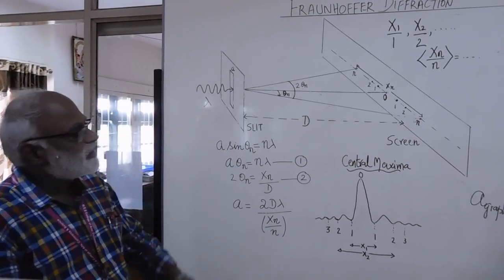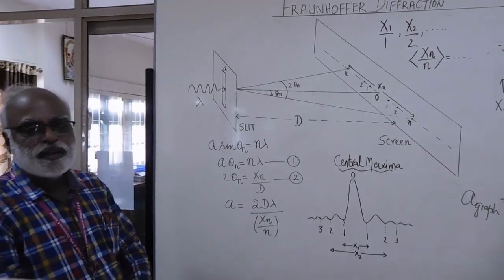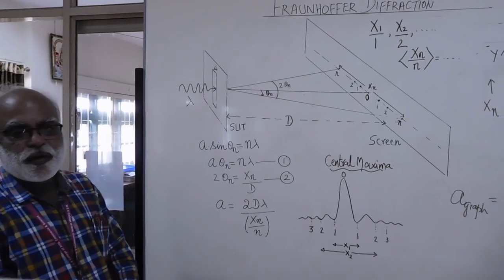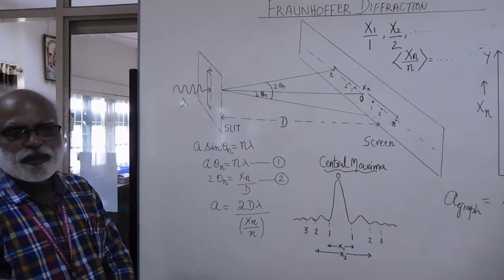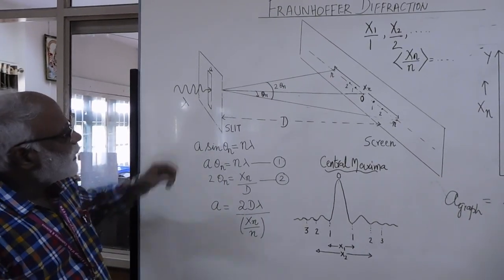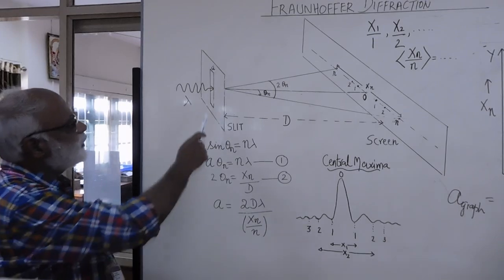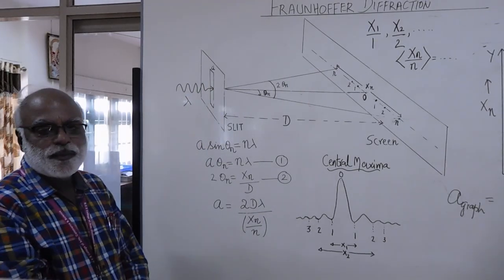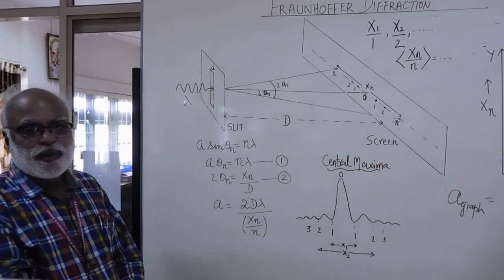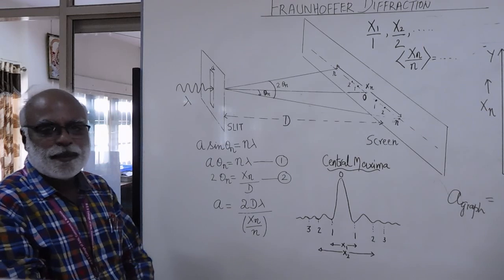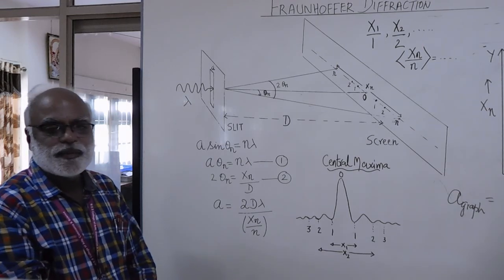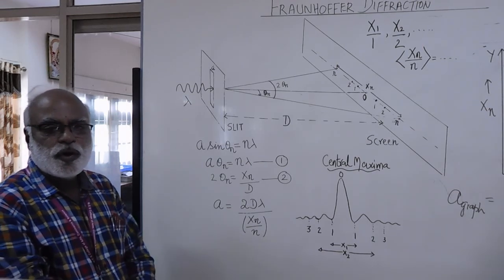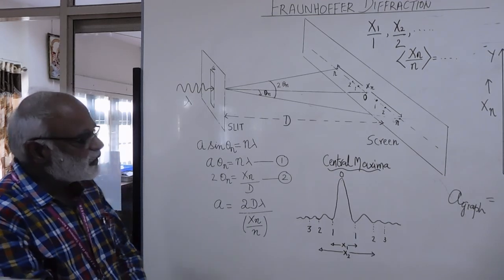This experiment is in optics, based on the study of Fraunhofer diffraction from a single slit. The aim of the experiment is to find the width of the single slit. We will briefly explain the principle of the experiment, show you the apparatus, demonstrate the experiment, and show you how to take readings and do the calculation.